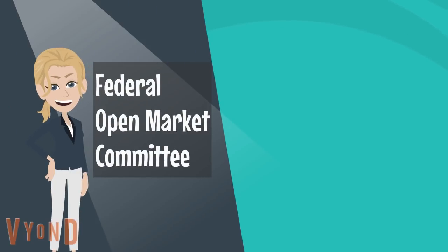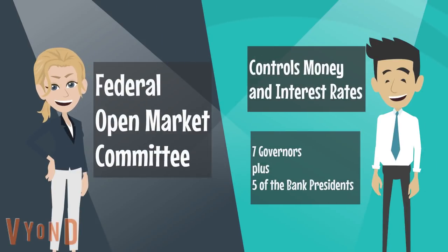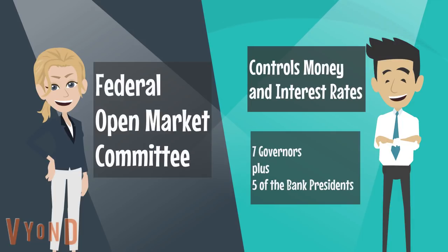Within the Federal Reserve, by law, there is something called the Federal Open Market Committee. When the Fed was first set up, it really wasn't independent — the Secretary of the Treasury ran it. Congress figured out that wasn't a good idea, split everything off, and put within the Fed structure this Federal Open Market Committee.